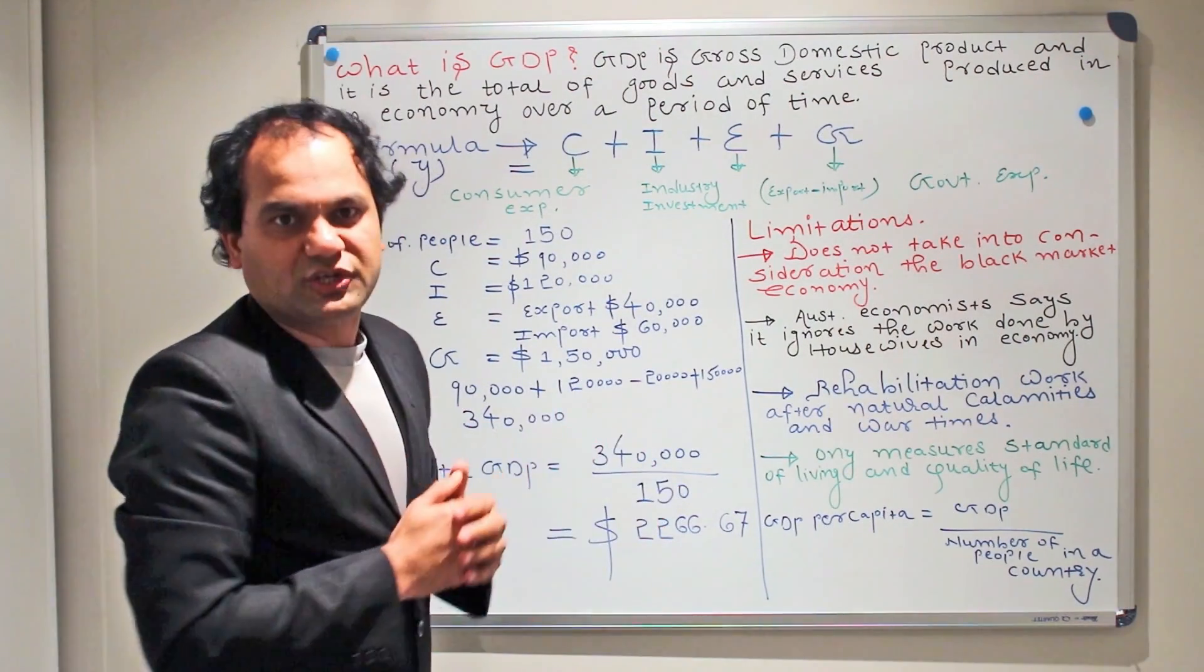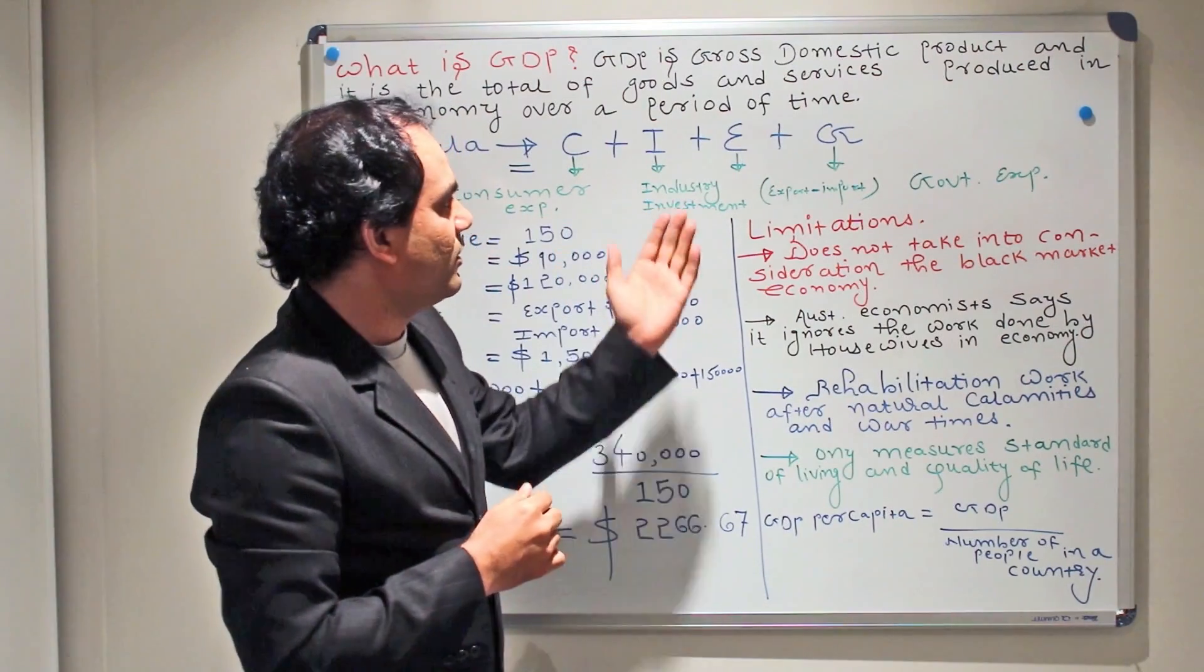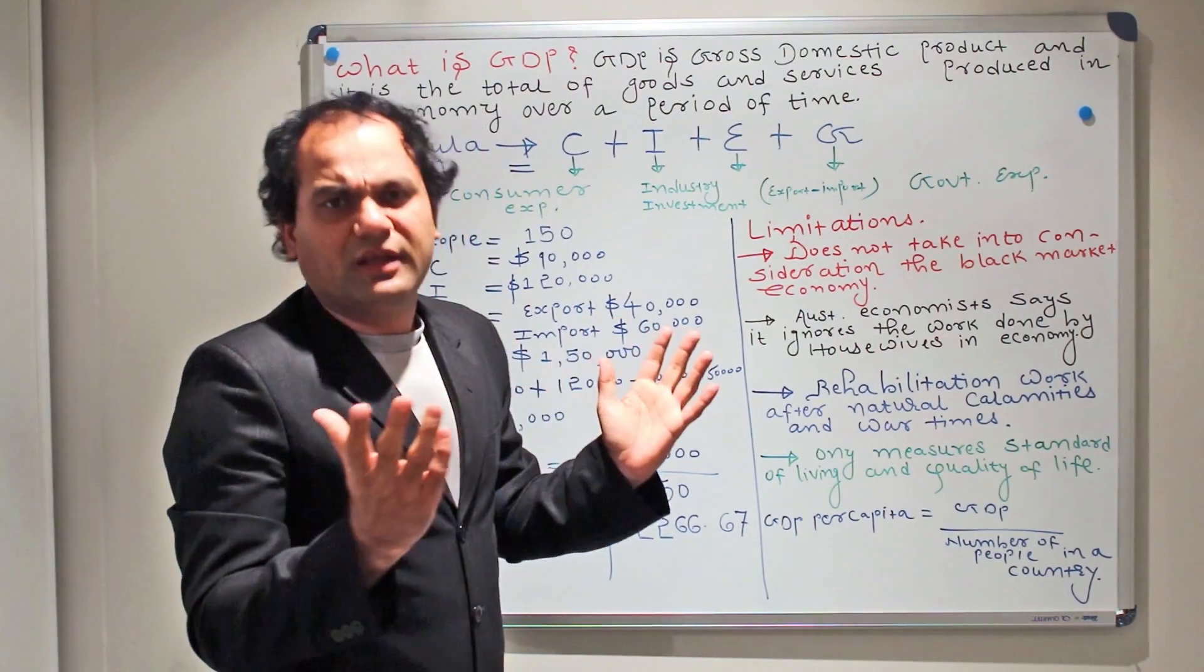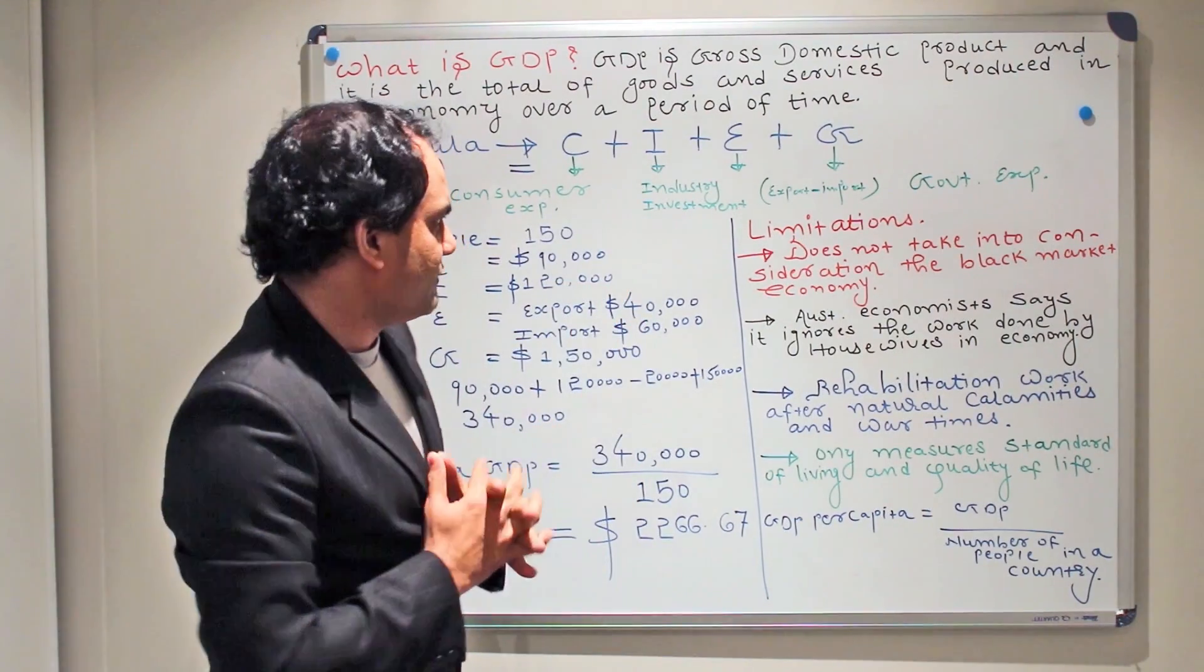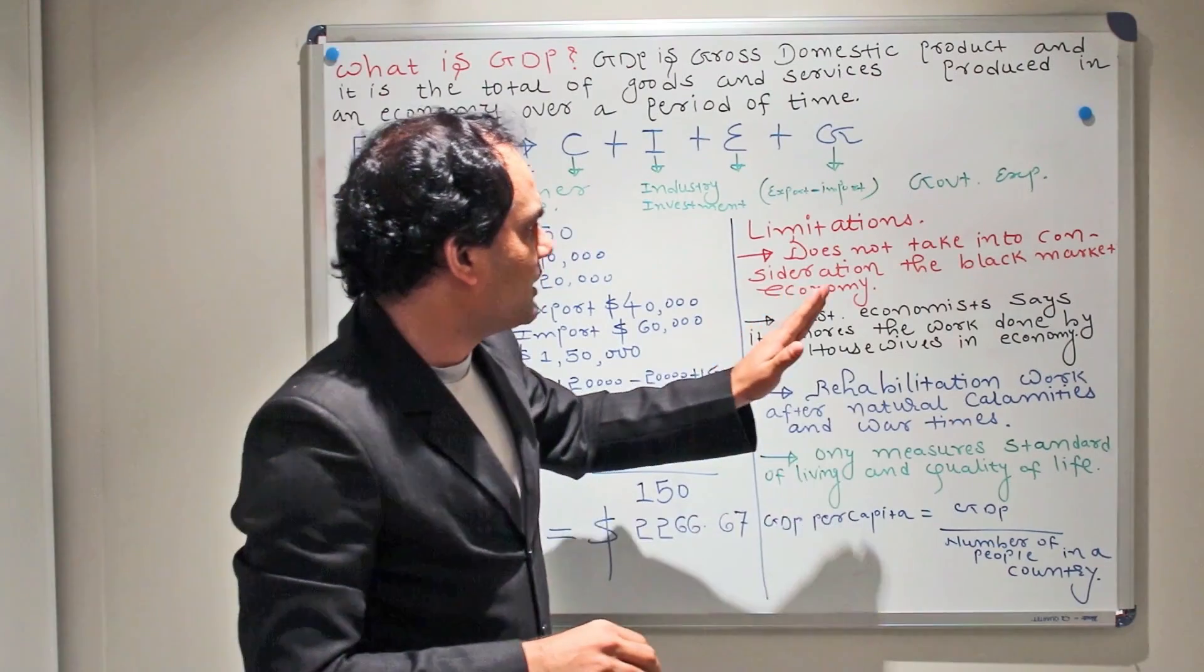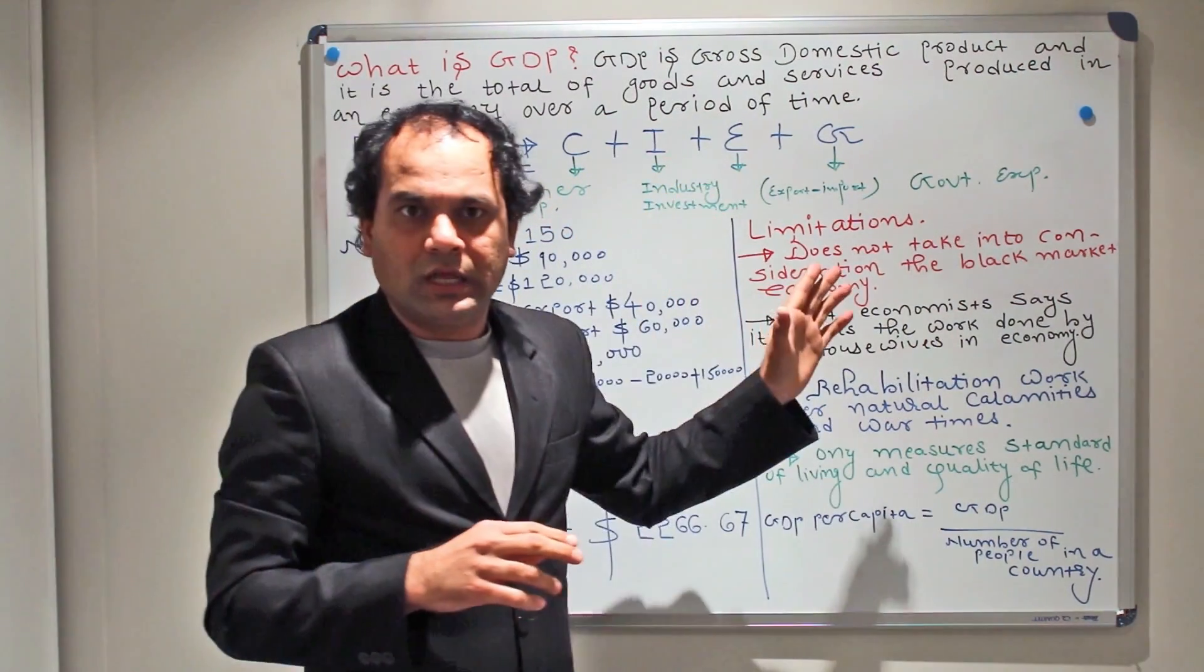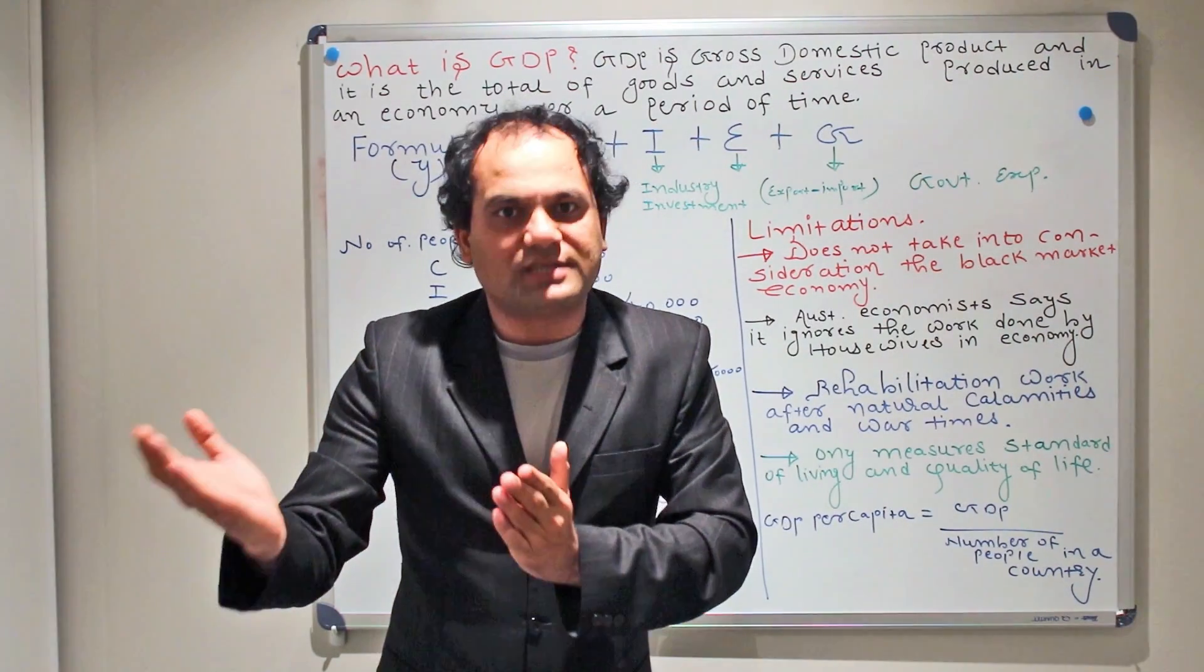Now there are some economists who have shown us the limitations of this method as well. There are so many limitations of the GDP method, but we will highlight only the main limitations. The first is that GDP does not take into consideration the black market economy. What do we mean by that? See this equation here, Y = C + I + E + G.